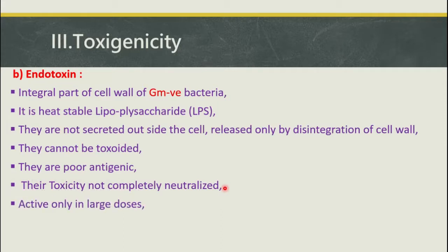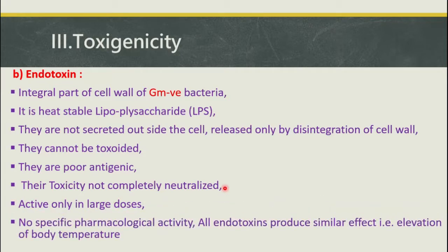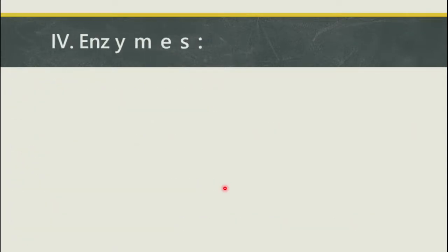Endotoxins are active only in large doses. Exotoxins are highly toxic even in minor doses, but endotoxins require very large doses to be effective — there must be disintegration of a large number of bacterial cell walls. They also have no specific pharmacological activity; all endotoxins produce a similar effect, which is elevation of body temperature, unlike exotoxins which do not elevate body temperature.